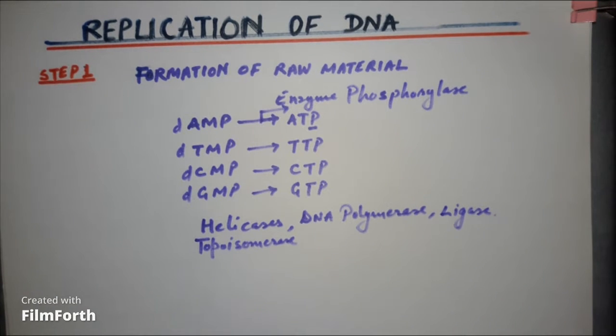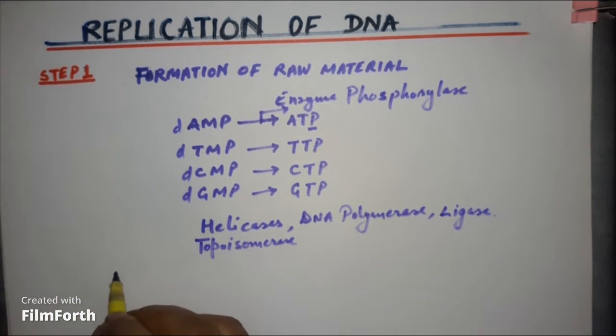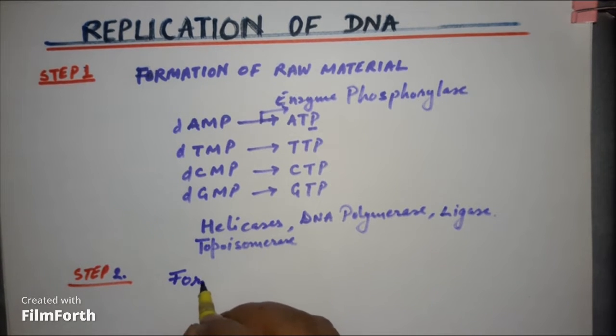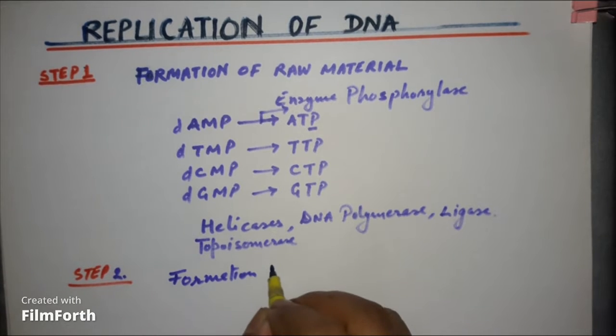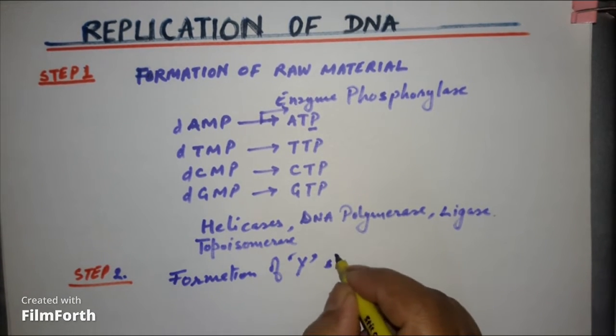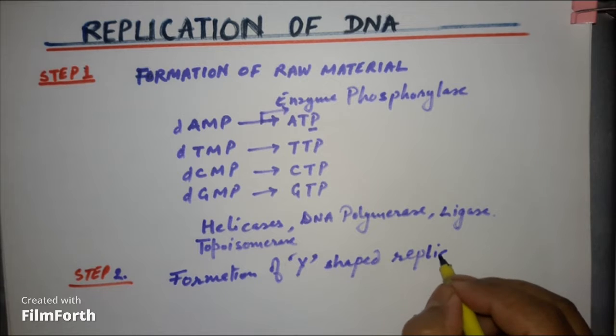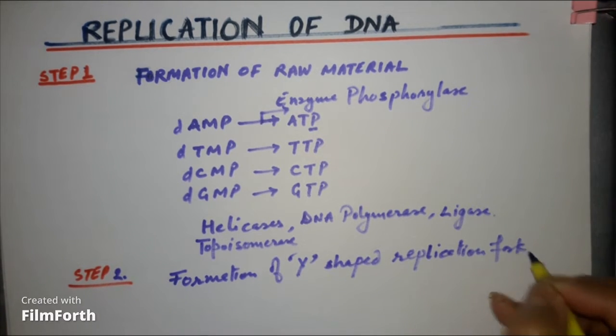Let's study the second step now. The second step is formation of RNA primer. Before that, formation of Y-shaped fork, Y-shaped replication fork. Fork, what is that? Kind of an instrument which is used to lift things.